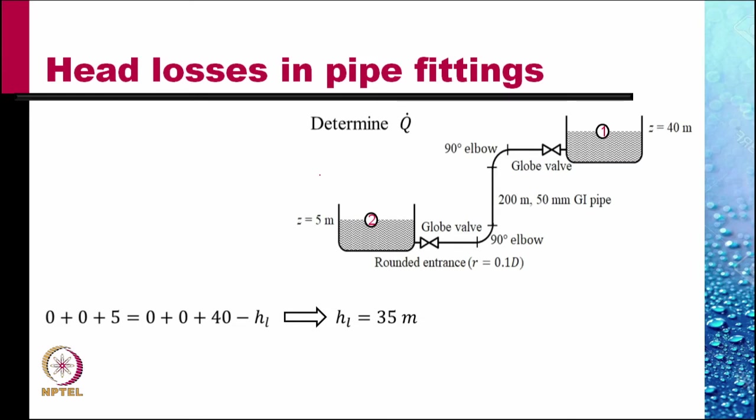First, we apply the Bernoulli equation between point one and point two shown. At the exit, the total head consists of the pressure head, the velocity head and the altitude head. This is at the exit and this is equal to the total head at the entrance minus the head loss. The velocity head is 0 at point 1, pressure is 0 at 1 since it is open to atmosphere, altitude is 40 meters minus h_L. So, this gives you h_L equals 35 meters.